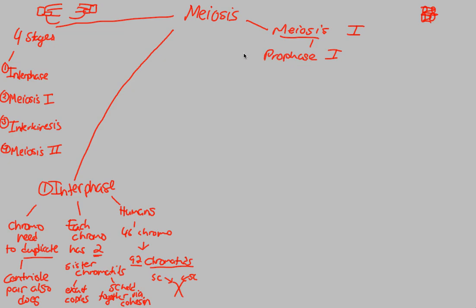As side notes for prophase I: chromatin condenses, because we have to turn it into those nicely visible chromosomes. We also have spindle formation — microtubules form and connect to the kinetochore, just as we mentioned in mitosis. Additionally, the nuclear envelope and nucleolus both break down so we can open up the genetic information to duplicate and then separate via meiosis.